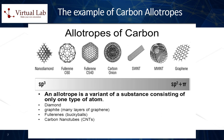Carbon, a well-known element, exhibits allotropes with diverse dimensions. Among the low-dimensional materials are soccer ball-shaped fullerenes, also known as buckyballs, which belong to the zero-dimensional category and consist of 60 carbon atoms. Carbon nanotubes fall under the one-dimensional materials with repeating periods, while graphene is a two-dimensional material with repeating patterns. On the other hand, three-dimensional materials encompass diamond and graphite.